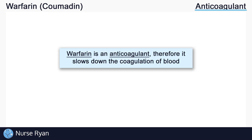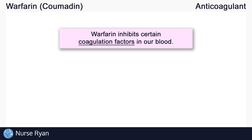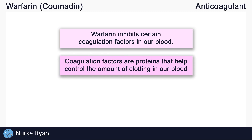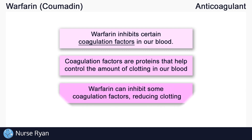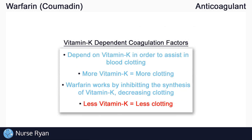Now let's take a closer look at how warfarin achieves its goal of anticoagulation. The way that warfarin works is by inhibiting certain coagulation factors in our blood. Coagulation factors are proteins that help to control the amount of clotting in our blood. Some of these coagulation factors rely on vitamin K and are sometimes known as the vitamin K dependent coagulation factors.